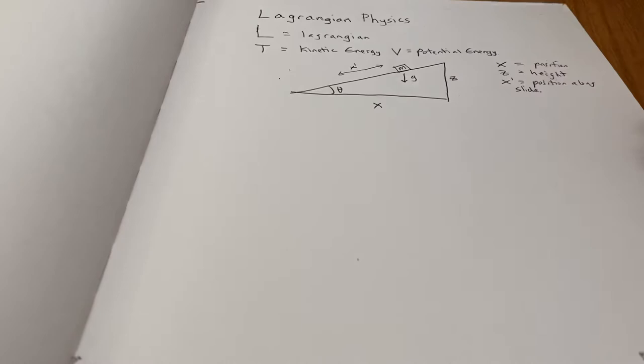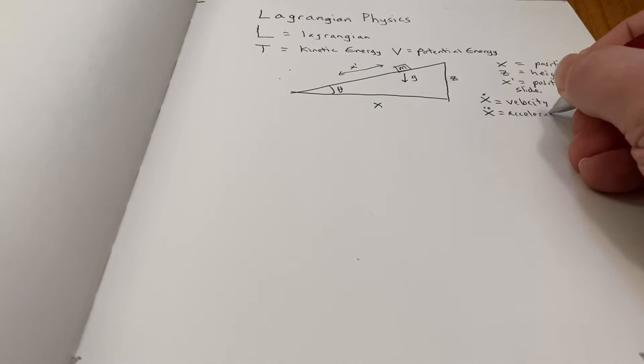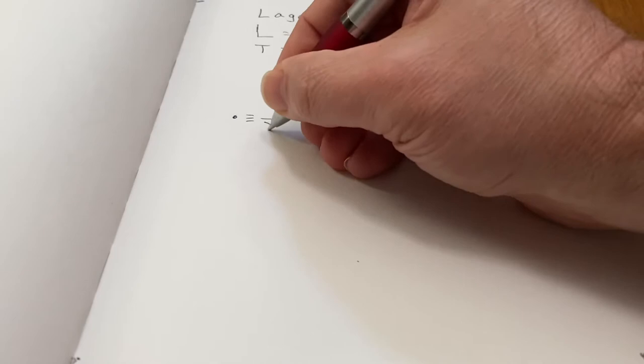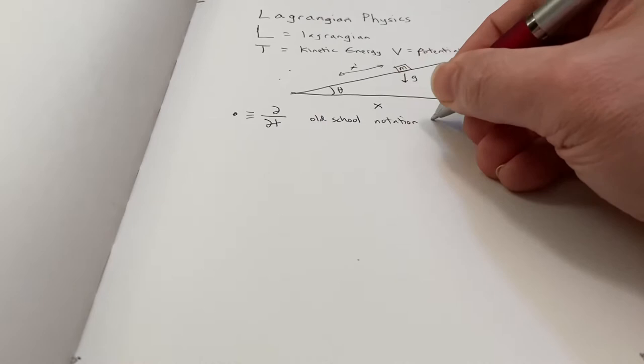X dot is an old-school Newtonian notation, because after all physicists and not mathematicians invented calculus, although mathematicians would disagree. X dot is derivative with respect to time, and X double dot is second derivative, so velocity and acceleration. The physicist notation is on the left, and the mathematician notation on the right. The d dt is the mathematician notation.